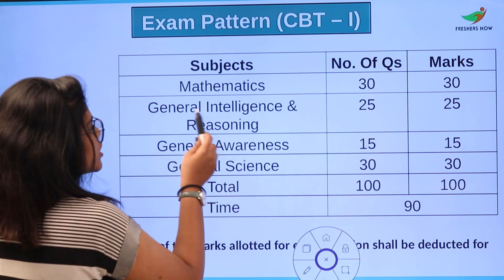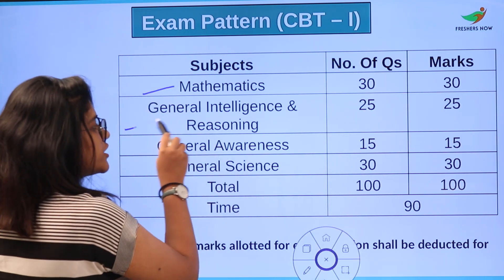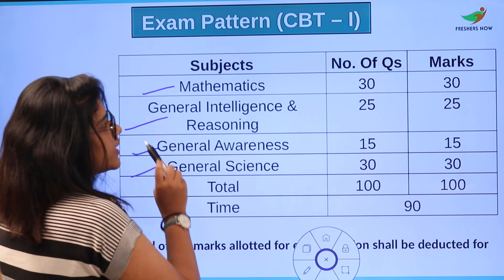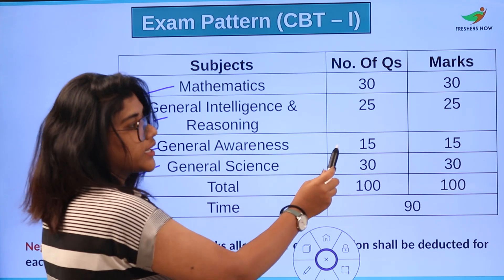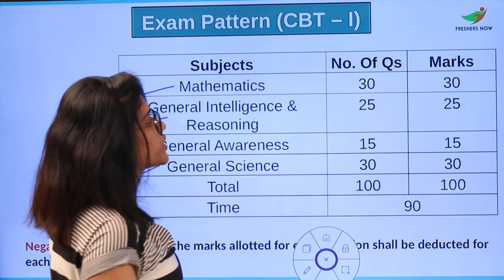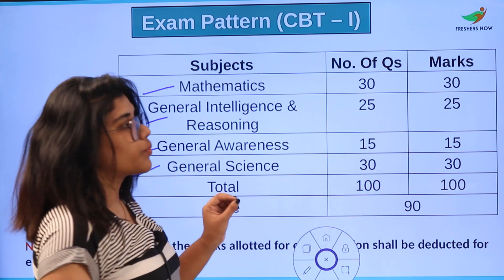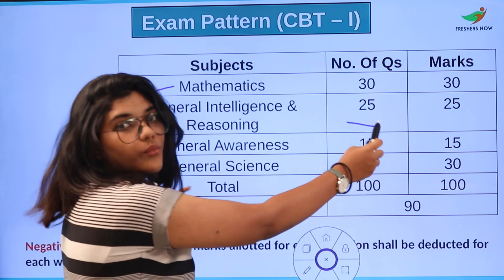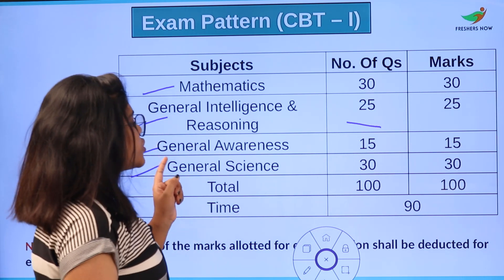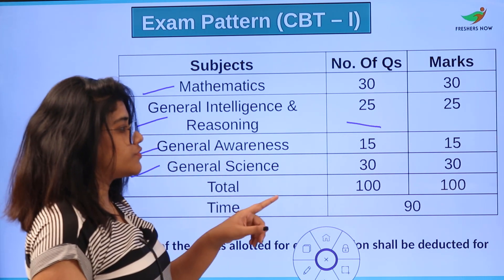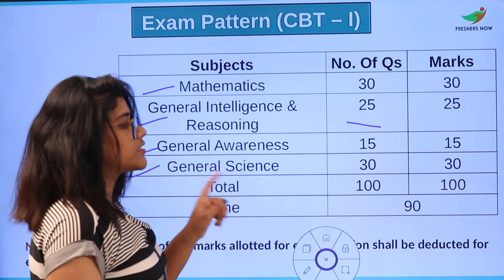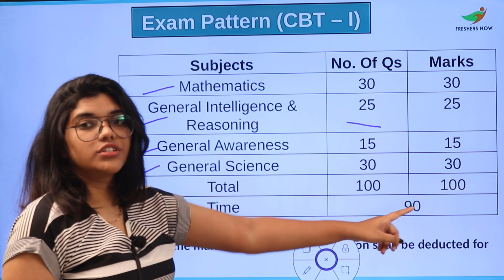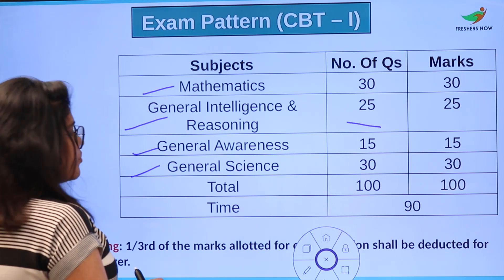The exam pattern for CBT Stage 1 is as follows. The subjects are Mathematics, General Intelligence and Reasoning, General Awareness, and General Science. For Mathematics, the number of questions is 30 with 30 marks. For General Intelligence and Reasoning, it is 25 questions with 25 marks. For General Awareness, it is 15 questions with 15 marks. For General Science, it is 30 questions with 30 marks. The total is 100 questions for 100 marks.